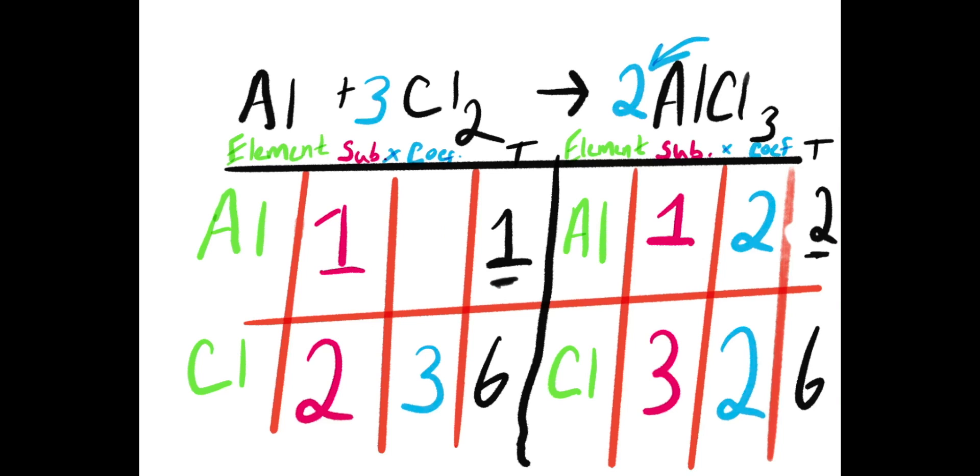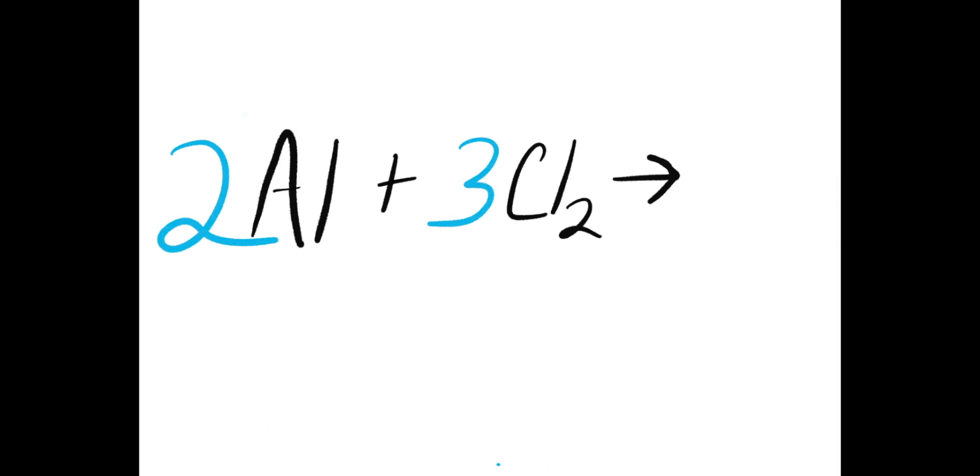In order to balance this equation, I'm going to have to add a coefficient to my aluminum on the reactant side. Once I add a 2 to this, it makes it so that I have 2 aluminums on both sides of the equation. Now I make sure that both sides are equal with every element and after that I can write my balanced equation.